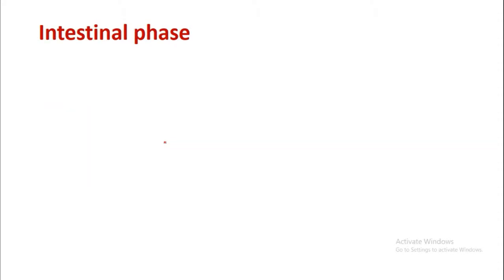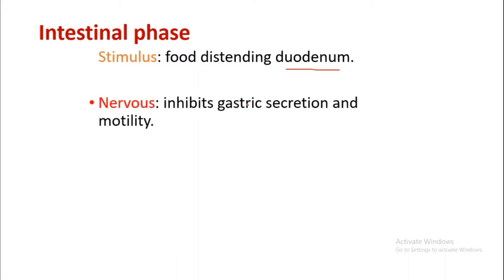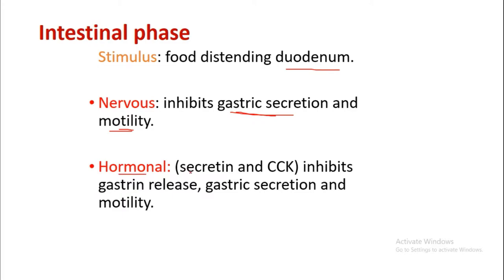The intestinal phase of gastric secretions: the stimulus is food distending the duodenum. Whenever food enters the duodenum it initiates the intestinal phase. Nervous regulation inhibits gastric secretion and motility. Hormonally, secretin and cholecystokinin are released from cells of the intestinal mucosa of the duodenum and small intestine, and they inhibit gastrin release, gastric secretion, and motility.